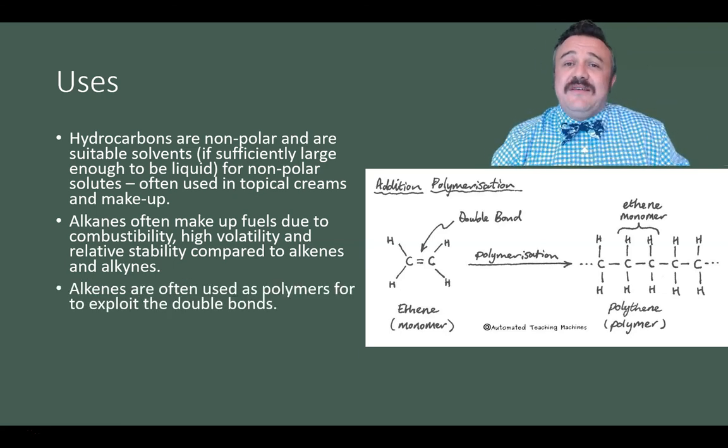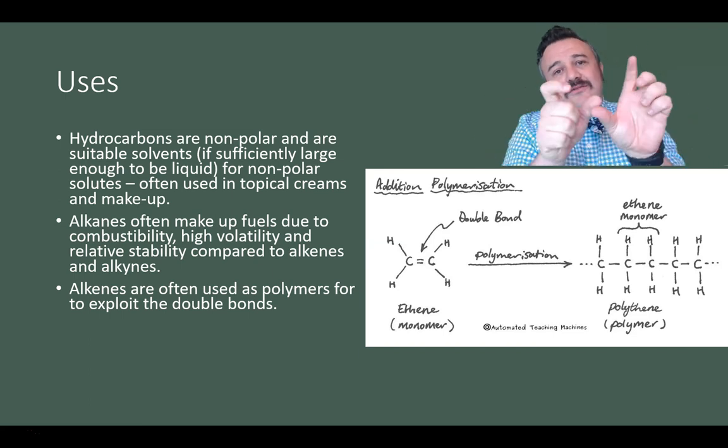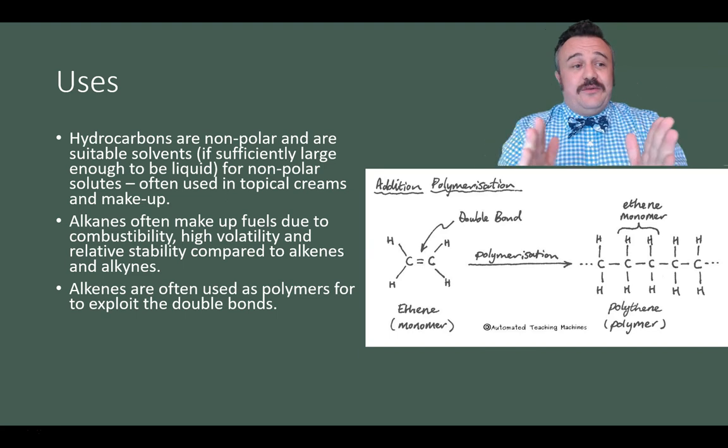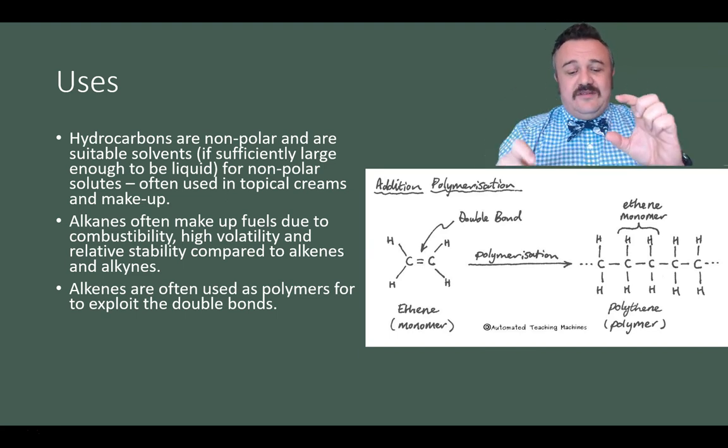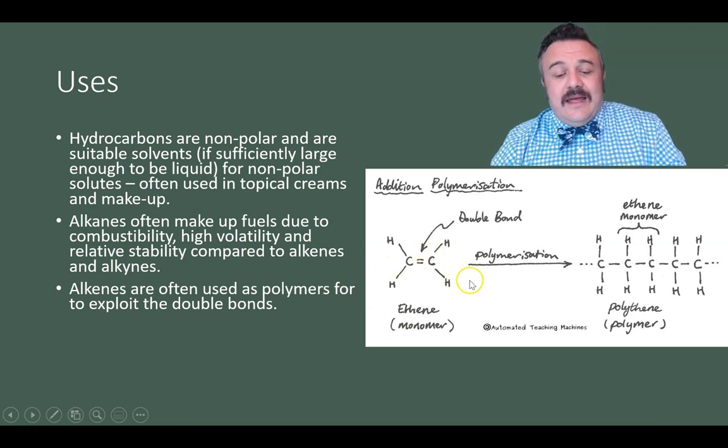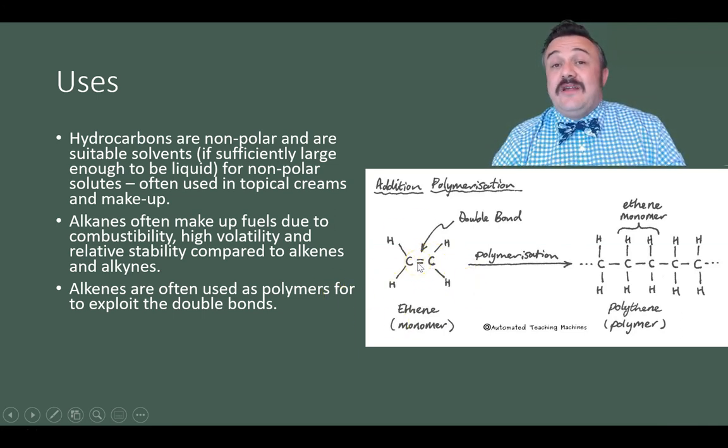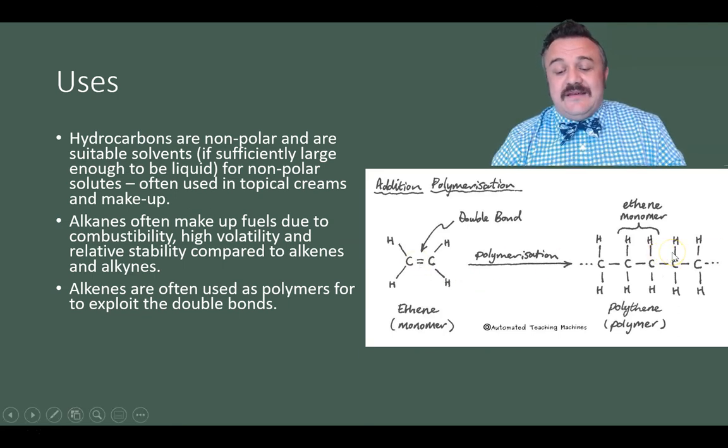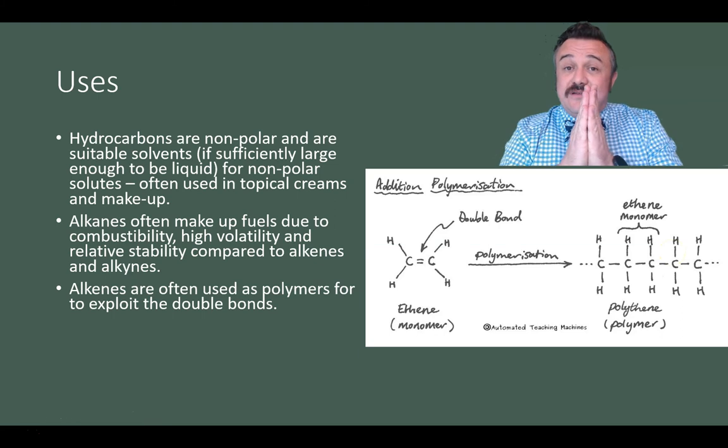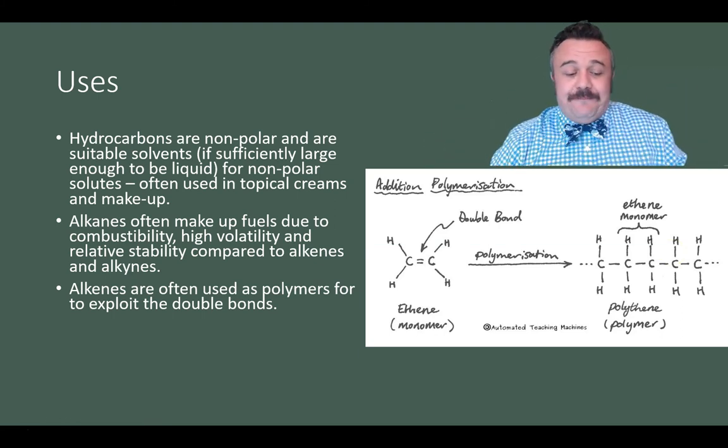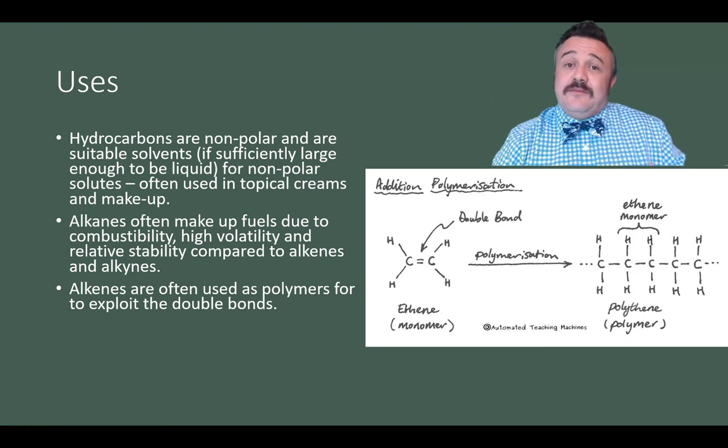Alkenes, on the other hand, because they have a double bond, we're able to exploit that double bond and turn them into polymers. So we can get an ethene, which we see down here. Here's our ethene. It's a monomer. And we can exploit this double bond where it's going to break easily and join ethenes together to make really long chains. And that's what plastics are, polymers. So alkenes are exploited as polymers.